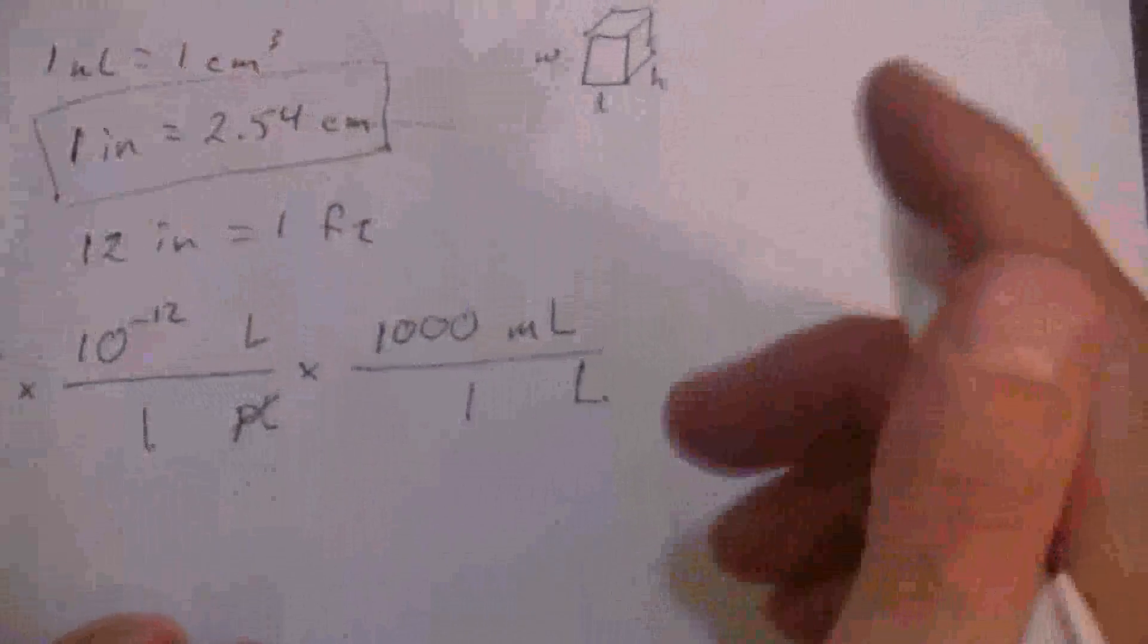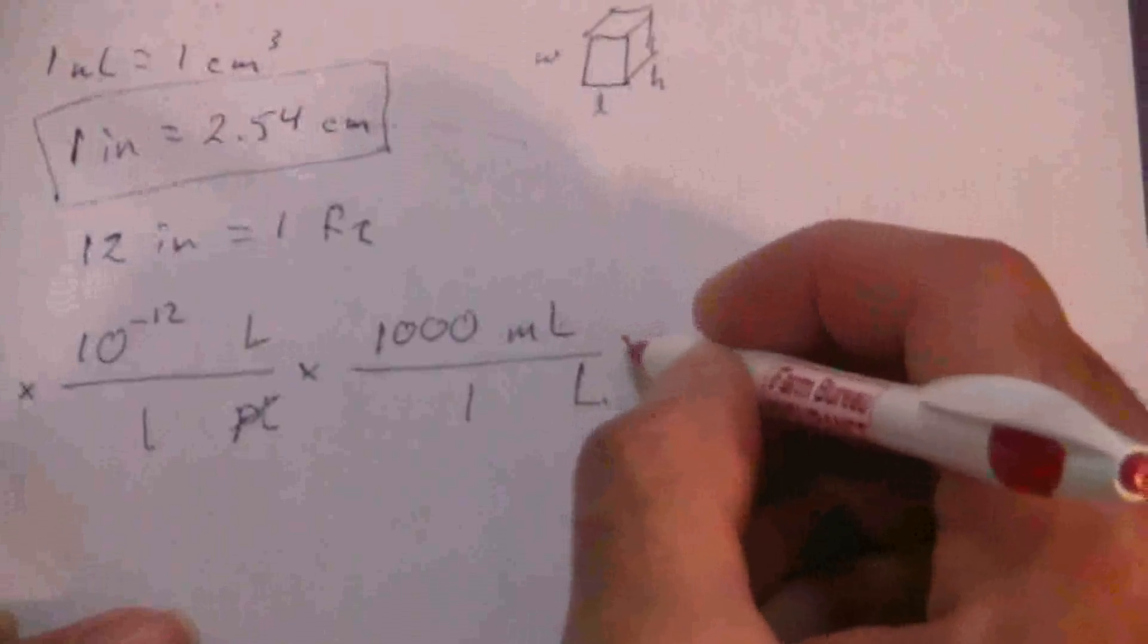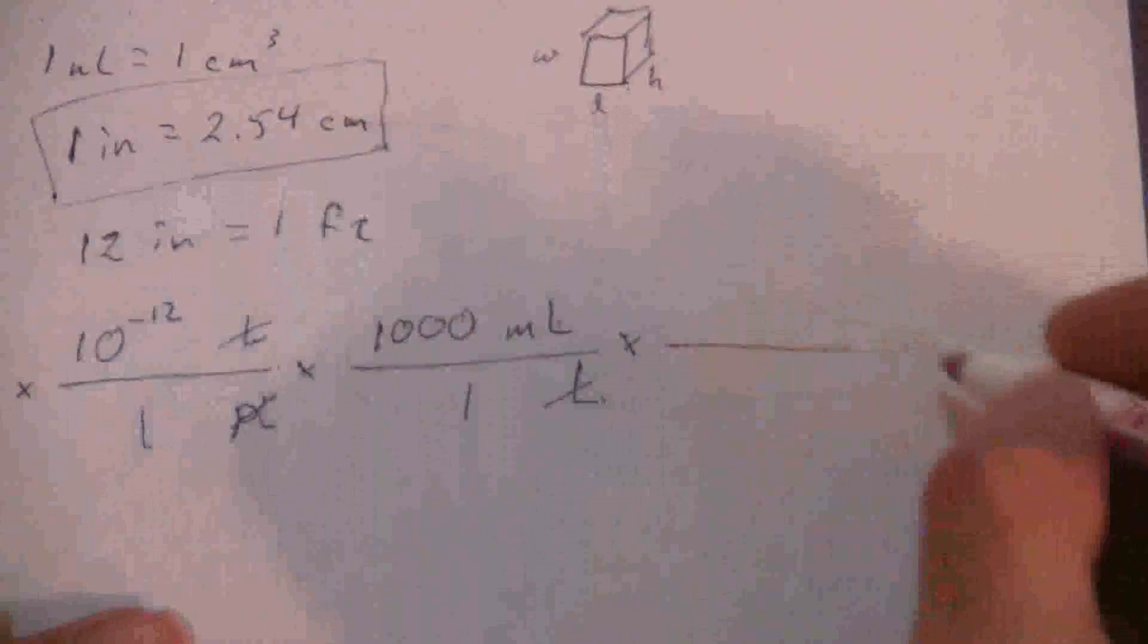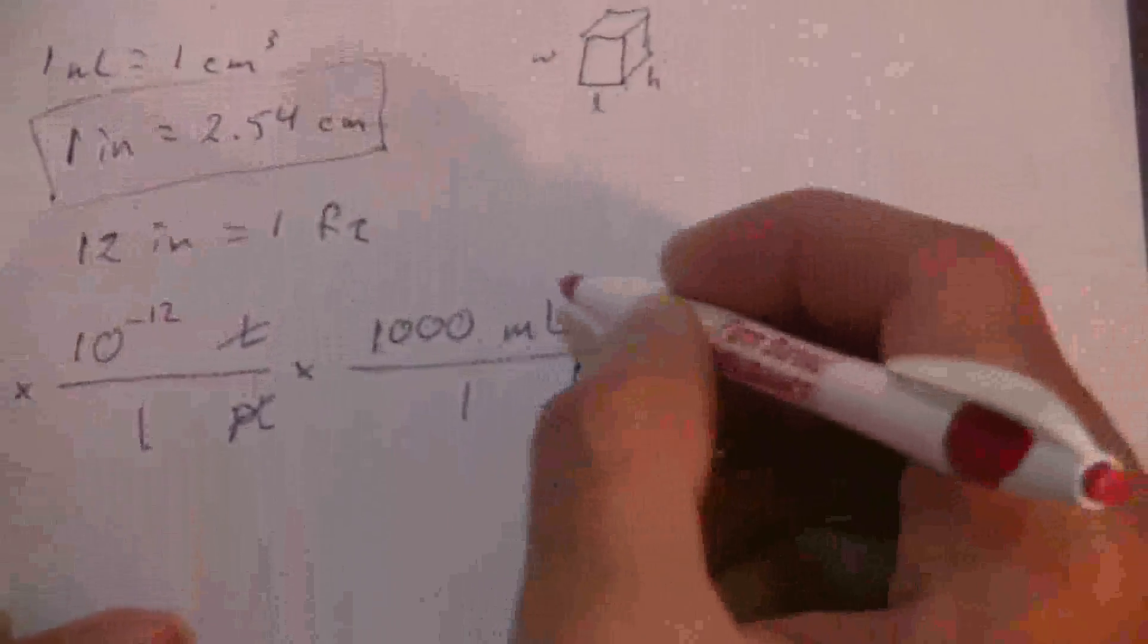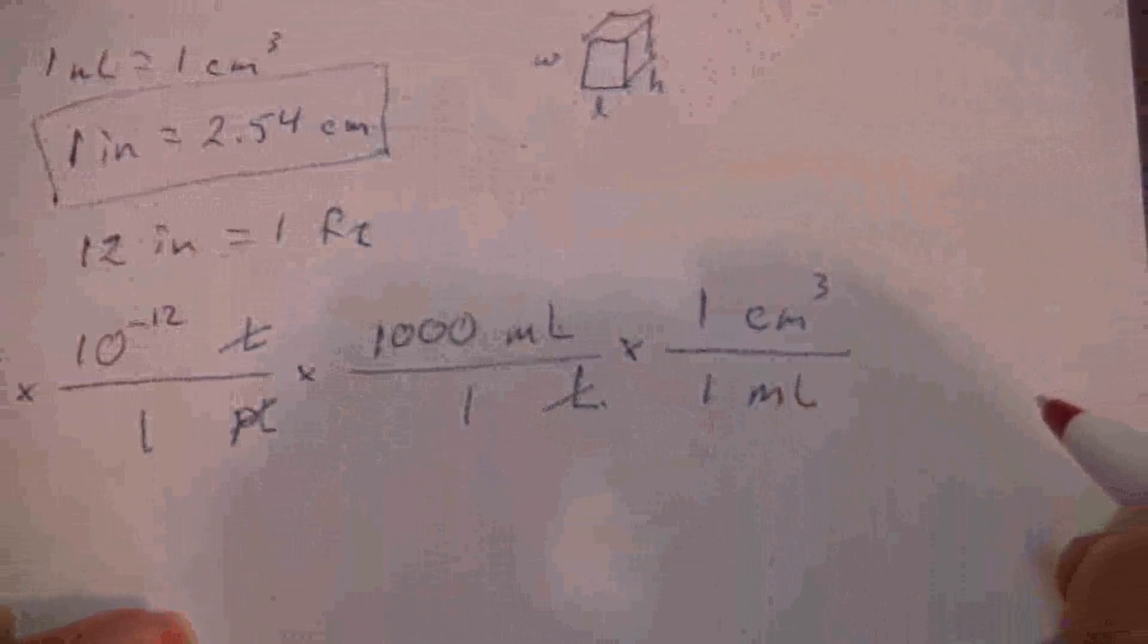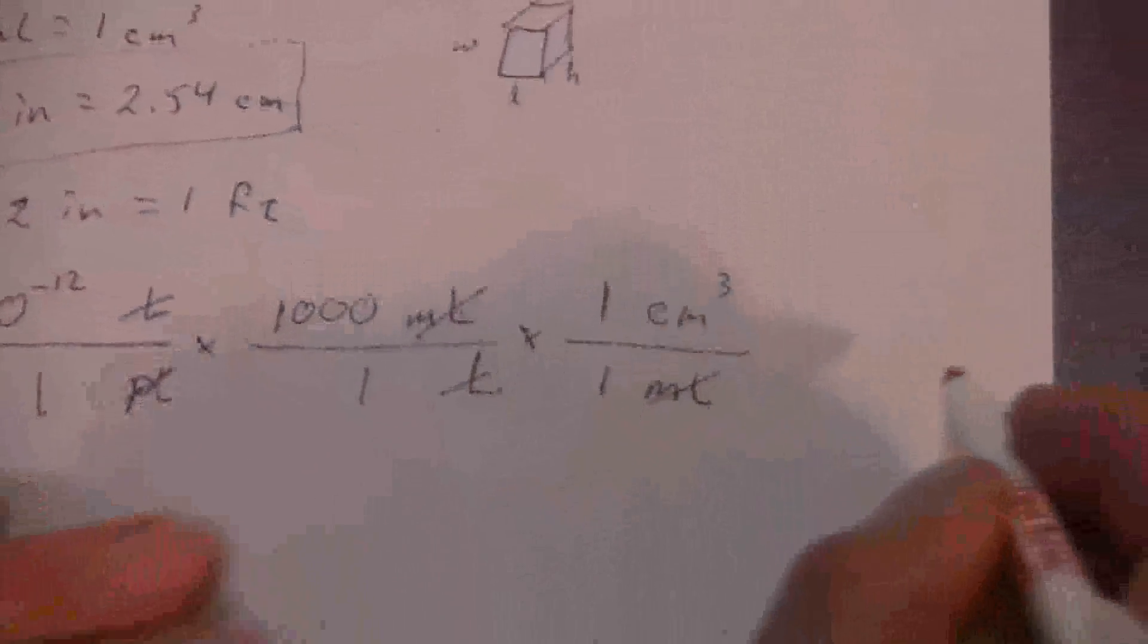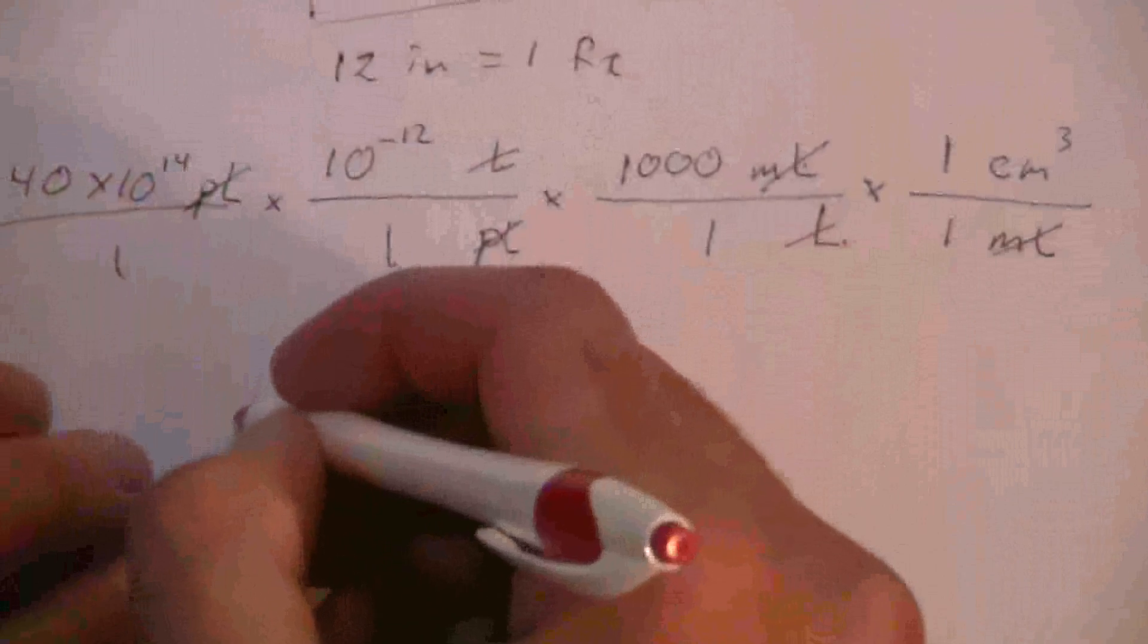So where are we at? We're at milliliters. So my next train car, I've canceled my liters, and I know that 1 milliliter, putting it on the bottom so that they will link up there, is equal to 1 cubic centimeter. Now my milliliters cancel, and I'm running out of paper, but let me just carry this on down here.